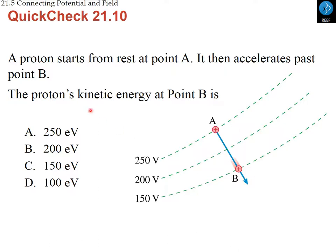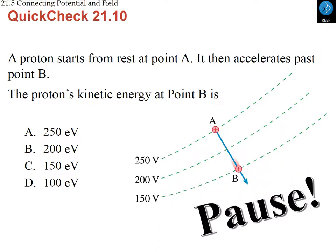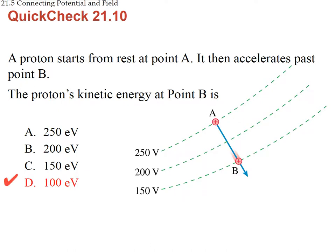Another problem: a proton starts at rest at point A at 250 volts and passes through point B at 150 volts. The kinetic energy at B equals the potential energy lost: the proton dropped 100 volts, so the kinetic energy gained is 100 electron volts.